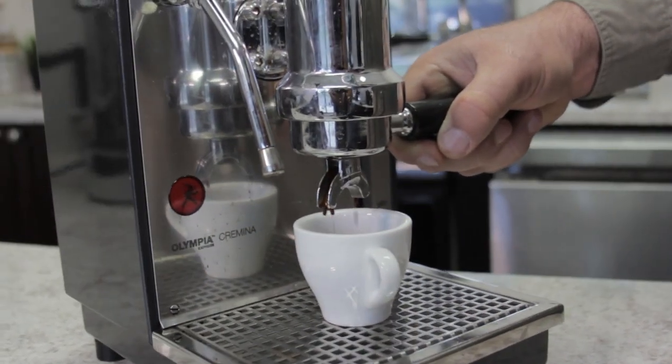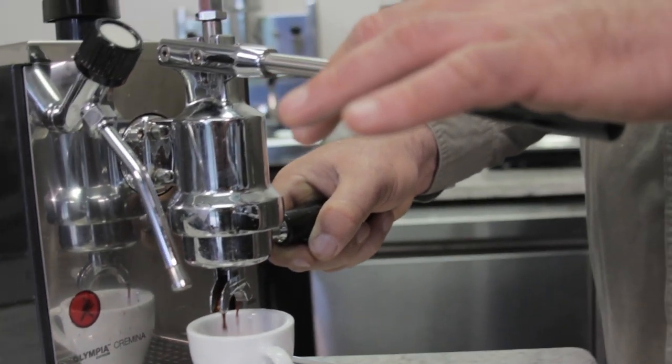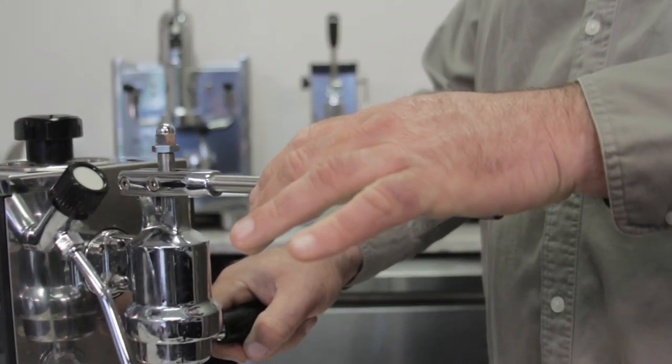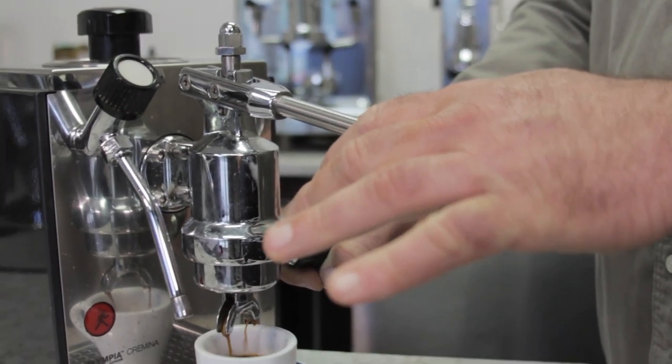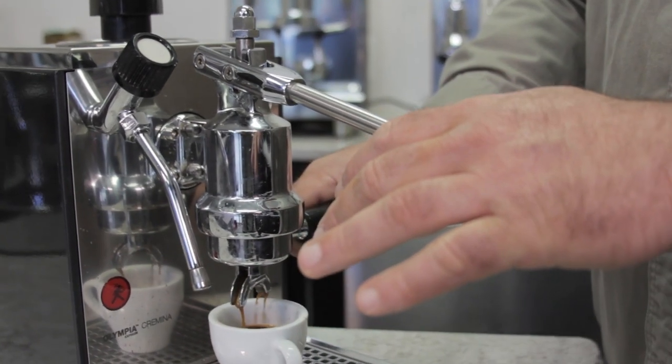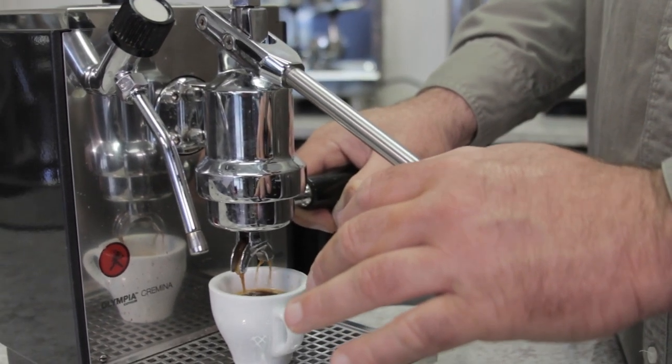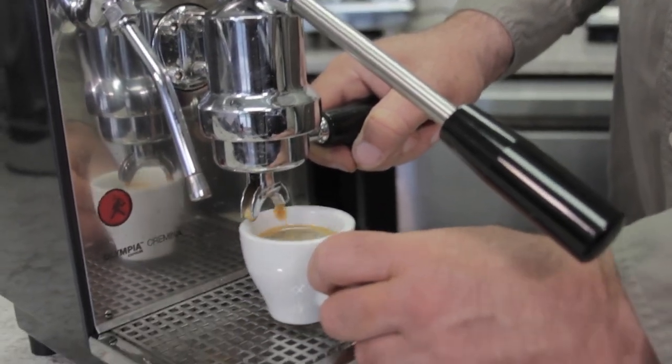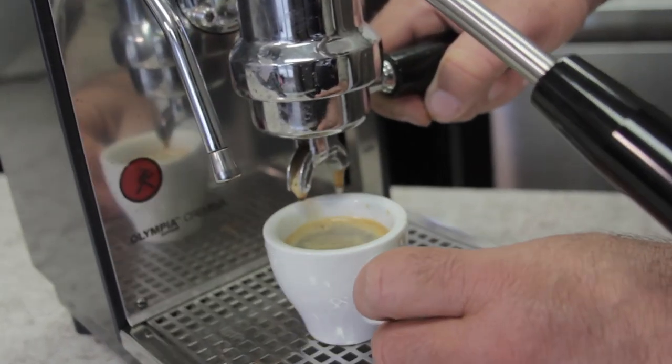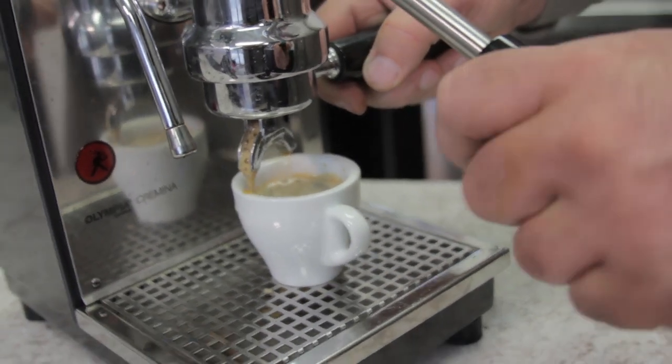As you can see, I'm getting less crema. Now some people like to lift the lever, bring it halfway down and bring it back up, and then get more espresso. And you can do this with the spring piston as well. But I'm using the same coffee, the same grinds, and if you notice, I am getting a little less crema. So in this case, I would have to adjust the grind to be a little finer.